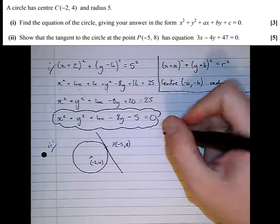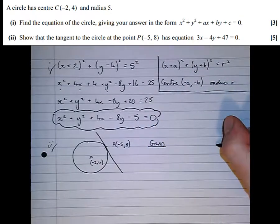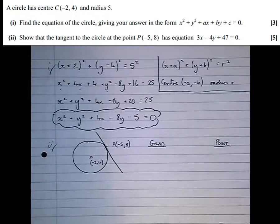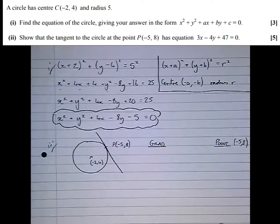To find the equation of a straight line, we need two things: the gradient and a point. Luckily, we've got a point—we're told it's (-5, 8). So that part's already done. However, we haven't got the gradient.